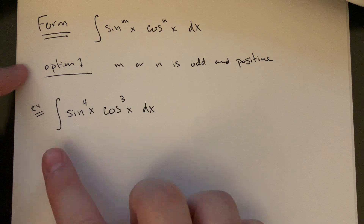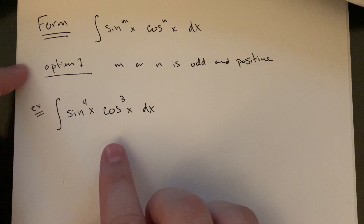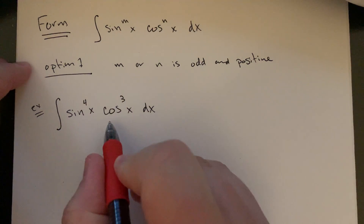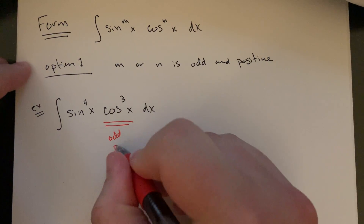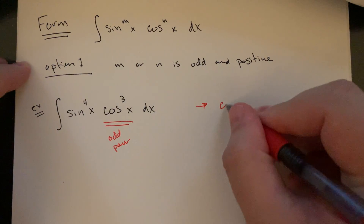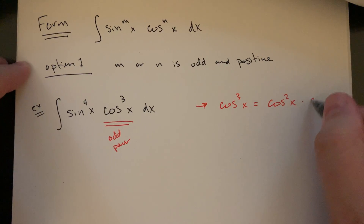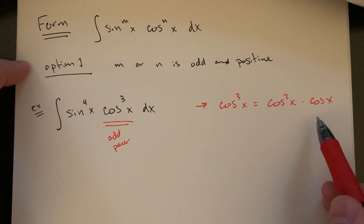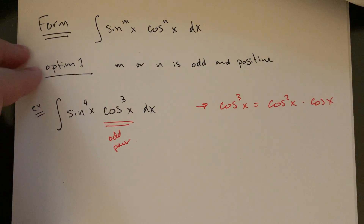For example, take the integral of sine to the fourth of x times cosine cubed of x dx. In this case it's the cosine function that's cubed — raised to the odd power. What you want to do is think of cosine cubed as cosine squared times a single cosine. You can break it up as a two and a one.